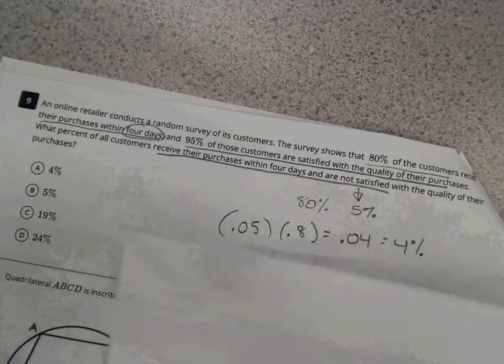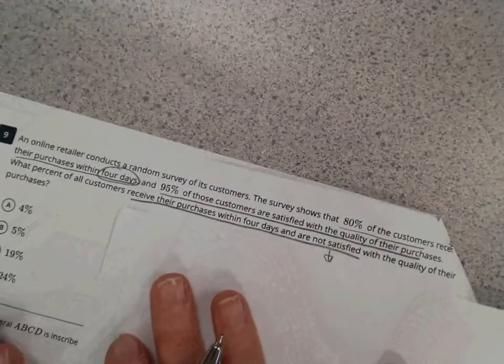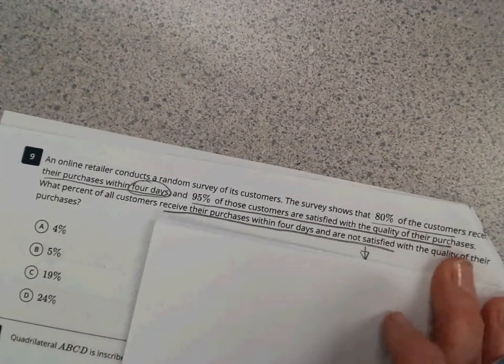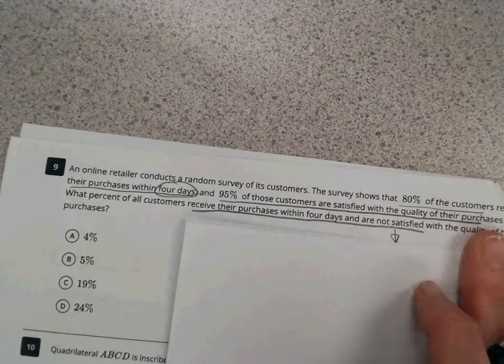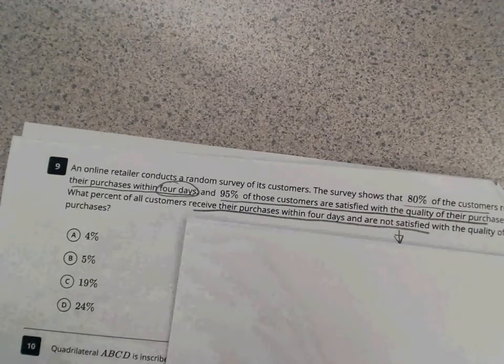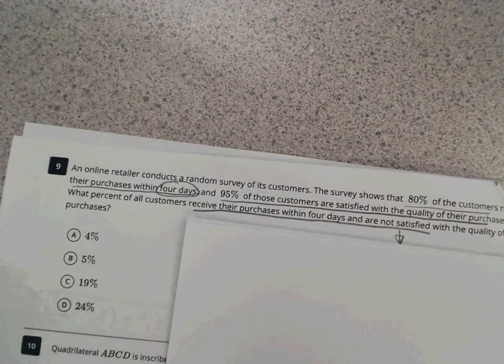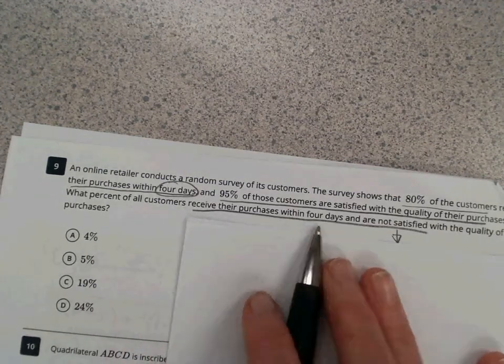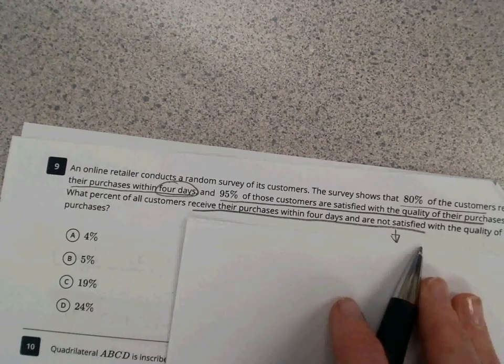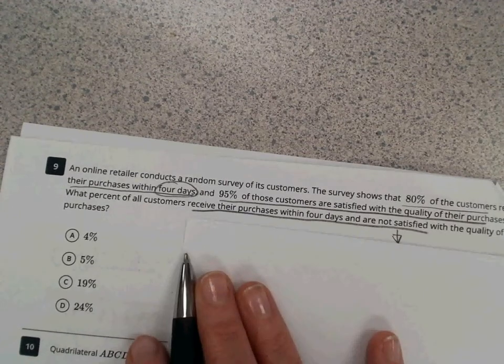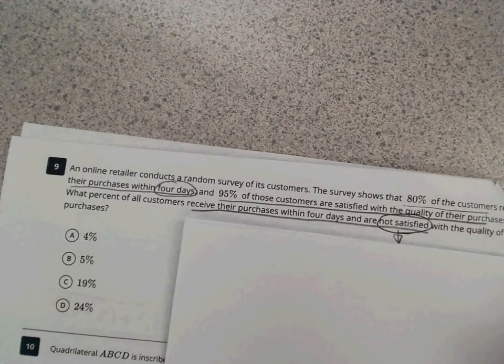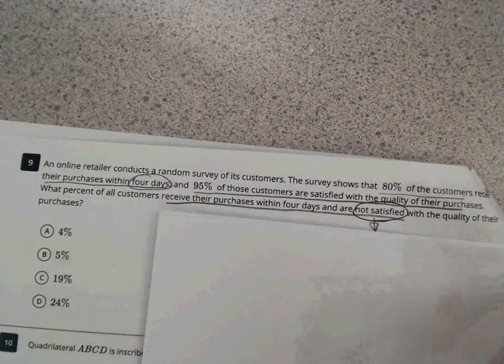All right. Now, on this question here, we have an online retailer conducting a random survey of its customers. The survey shows that 80% of the customers received their purchases within four days. 95% of those customers are satisfied with the quality of their purchases. What percent of all customers receive their purchases within four days and are not satisfied with the quality of their purchases? So, we have not satisfied. Careful. Read, read carefully. Reread.